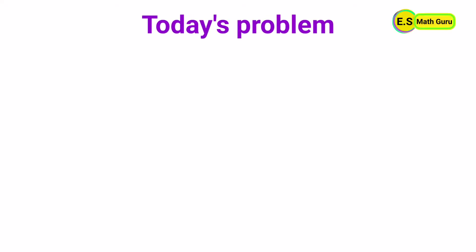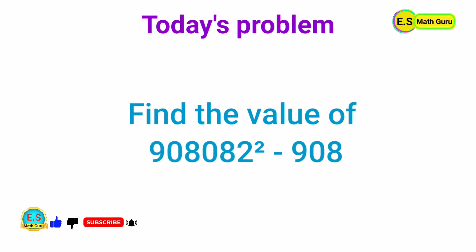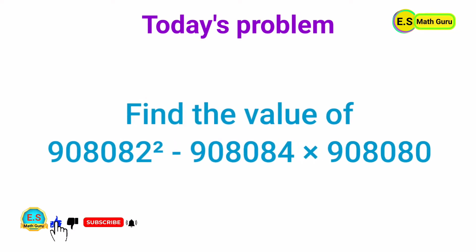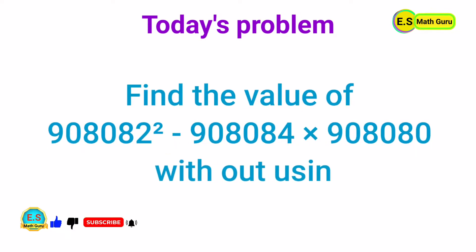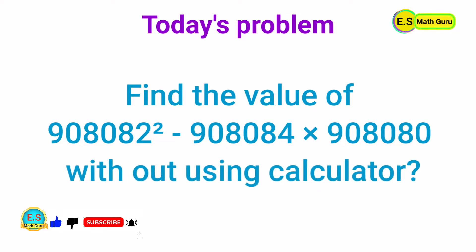Namaste to one and all. Today's math problem: find the value of 908,082 squared minus 908,084 times 908,080 without using a calculator.